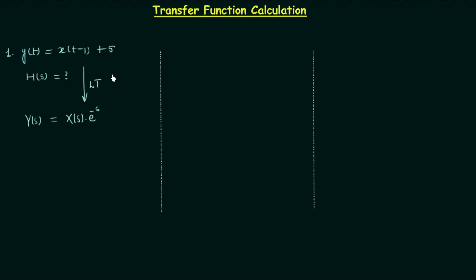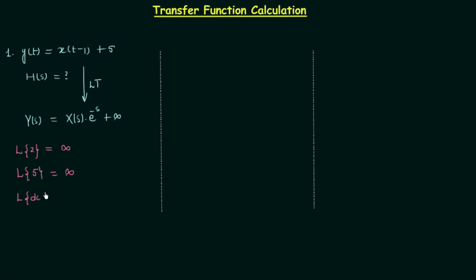Now, the Laplace transform of 5 is infinity. If you remember the lecture on prerequisites for LTI systems where I explained the Laplace transform, we calculated the Laplace transform for 2 and got infinity. In the same way, when you calculate the Laplace transform of 5 you will get infinity. We can generalize this: the Laplace transform of any DC value is equal to infinity.